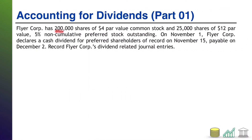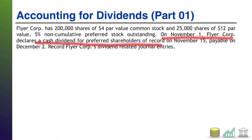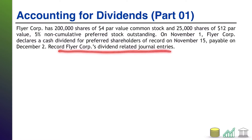Part one. FlyerCore has 200,000 shares of $4 par value common stock and 25,000 shares of $12 par value, 5% non-cumulative preferred stock outstanding. On November 1st, FlyerCore declares a cash dividend for preferred shareholders of record on November 15th, which is payable on December 2nd. Your goal is to record the dividend-related journal entries.